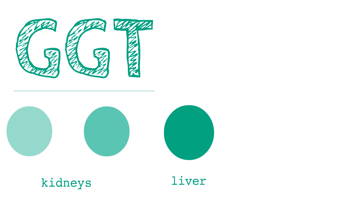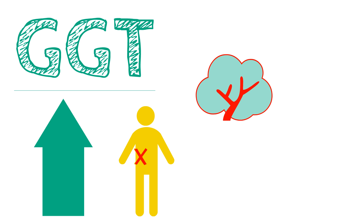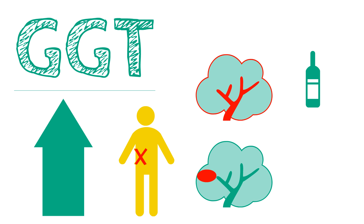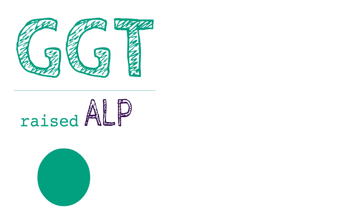Gamma-glutamyl transpeptidase. GGT is primarily found in the kidney, the liver, and pancreatic cells. It raises significantly with obstructive jaundice, cholangitis, cholecystitis, and alcohol abuse. It rises less so with hepatocellular disease. GGT is useful for indicating whether the source of raised ALP is due to hepatic problems or other problems.